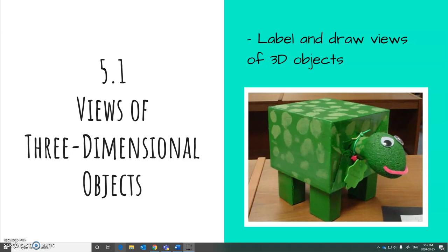Today's lesson, we're going back a little bit to 5.1. It's titled Views of Three-Dimensional Objects. And in this section, we are going to label and draw different views of objects which you might find in your house, or they might be using something known as isometric dot paper.